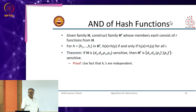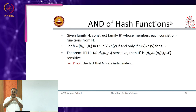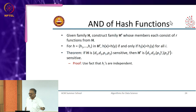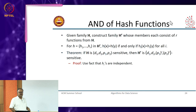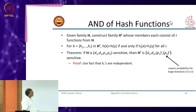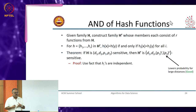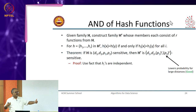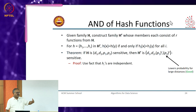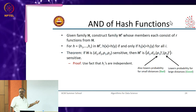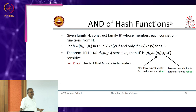If H is d1, d2, p1, p2 sensitive, then H prime formed by taking the AND of R different hash functions will be d1, d2, p1^r, p2^r sensitive. This is because all the hash functions are independent. The good thing is that the p2 guarantee — the probability for far elements hashing together — is reduced to p2^r. Unfortunately it also lowers the probability for the p1 side of things.